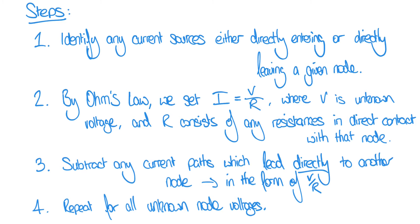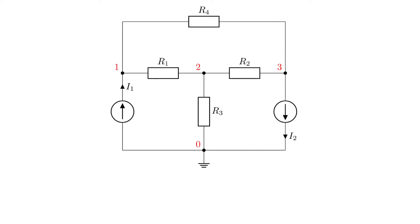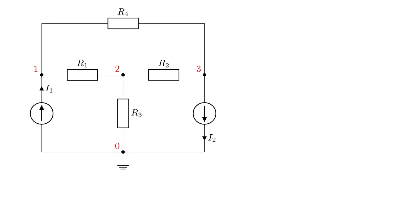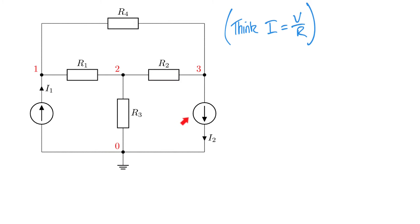This probably seems confusing at first, but let's put it into practice with our circuit. Taking node 1 as an example, we set up an equation in the form of Ohm's law: I equals V over R. Node 1 is directly fed by current source I1, which is flowing into that node. I'm only interested in current sources directly connected to this node, so I2 over on the other side doesn't count for this particular node.